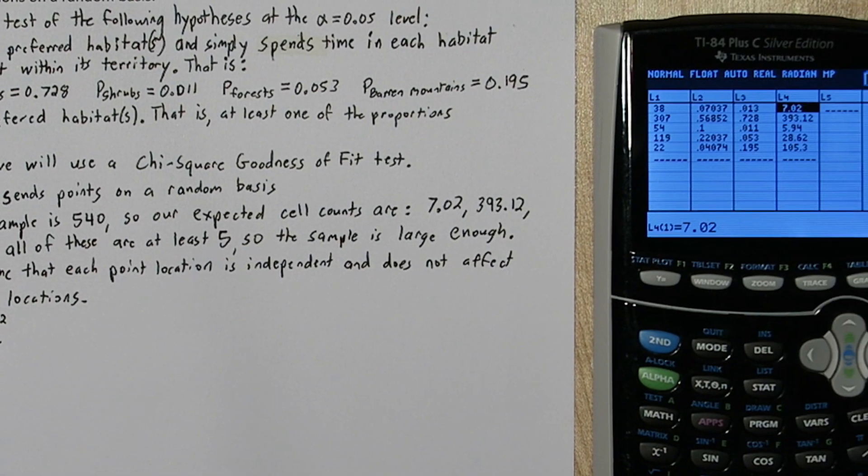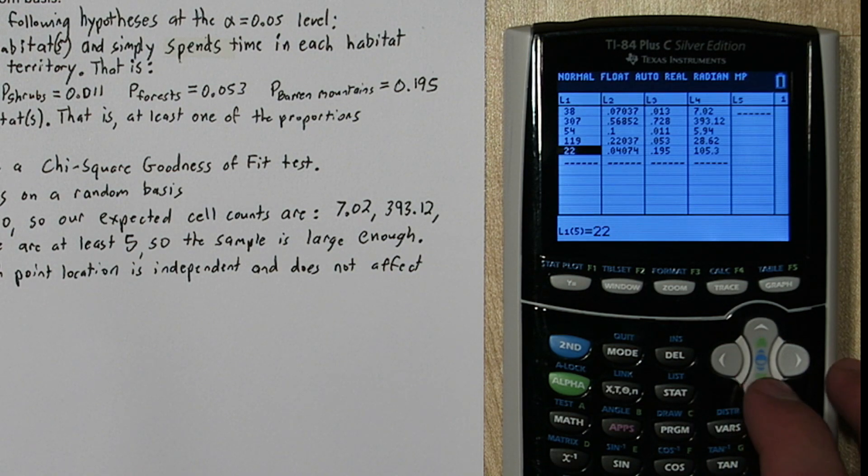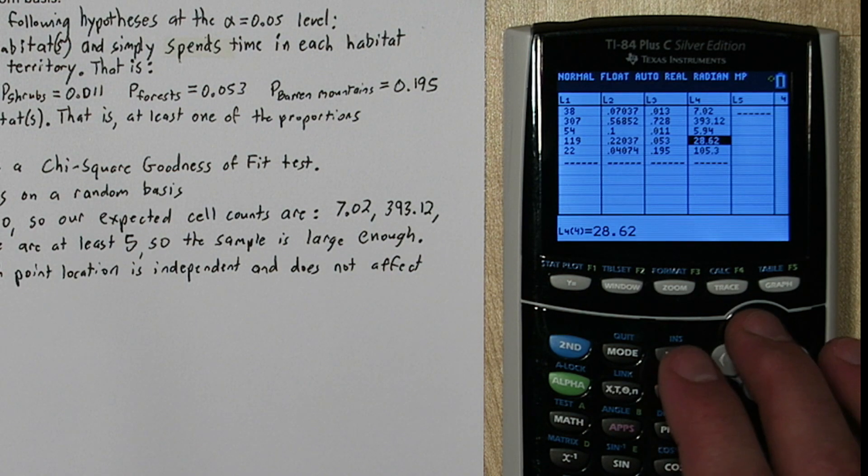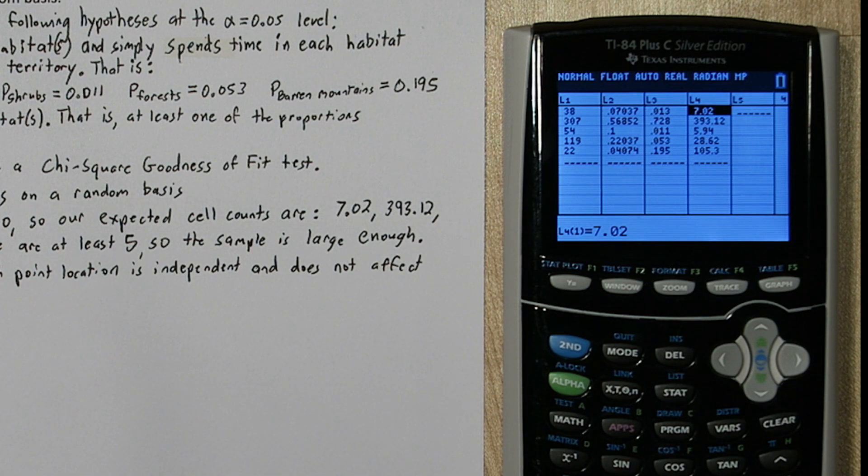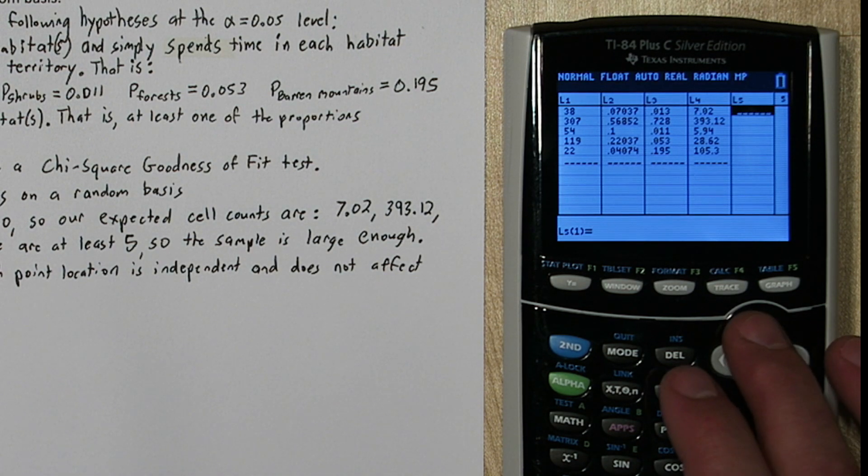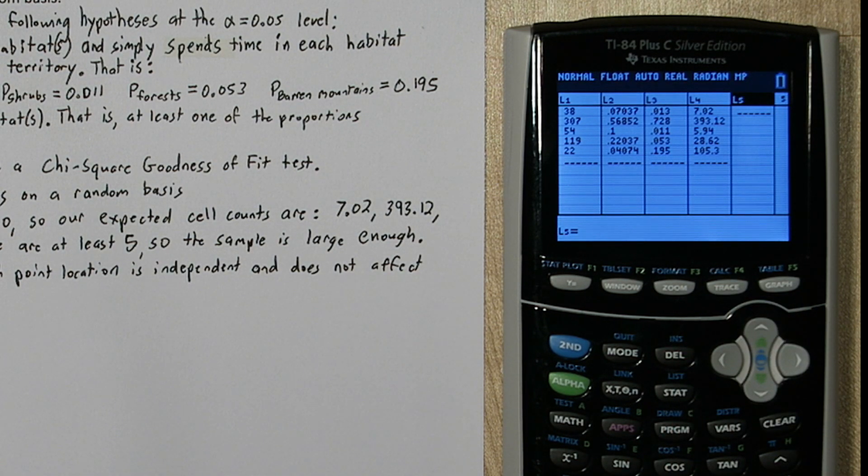So if we press the stat button, in list one we have our observed counts right here. And over here in list four are our expected counts. So if we go to list five, we can start calculating our chi-square test statistic. Press up so you've highlighted list five. So we need observed minus expected squared. So I'm going to do open parenthesis, observed, which is list one,